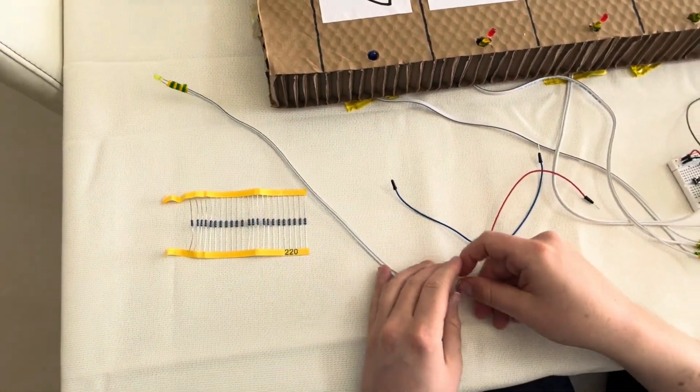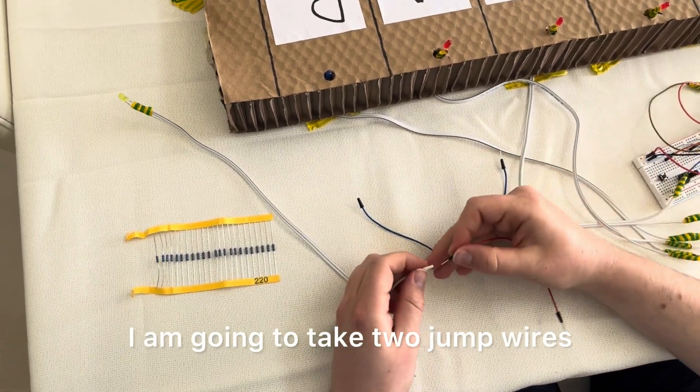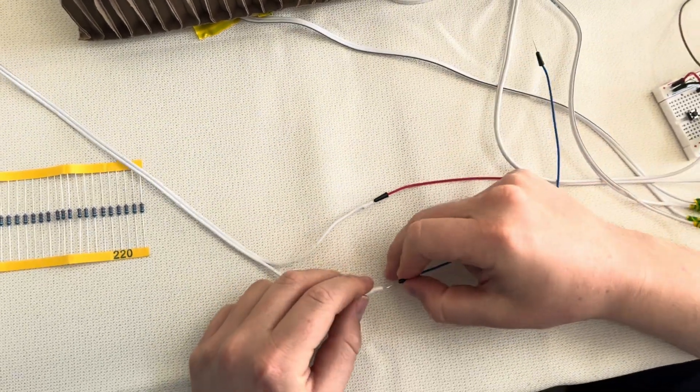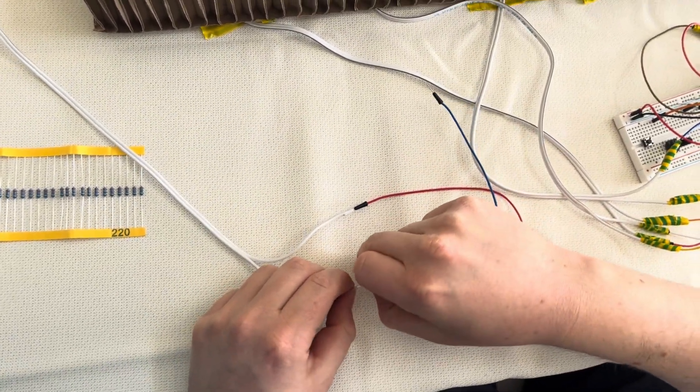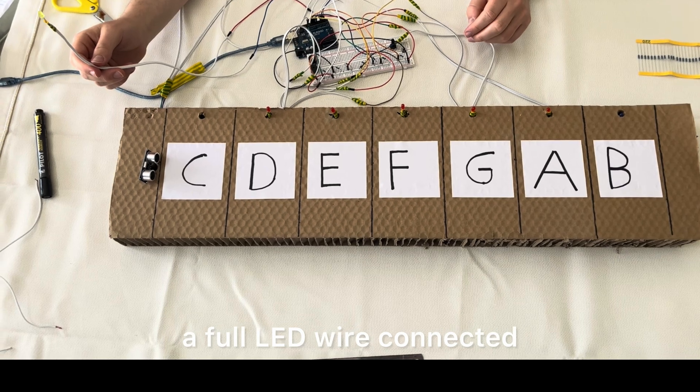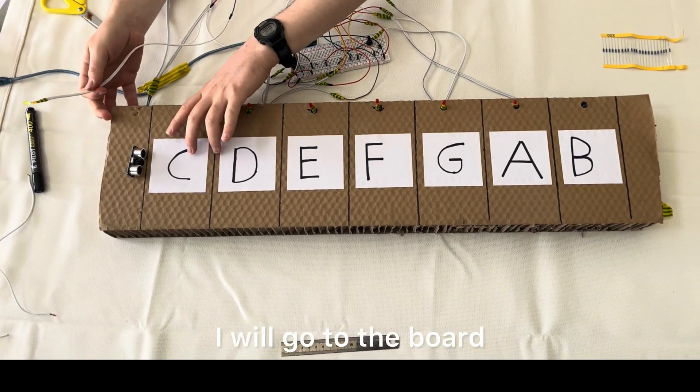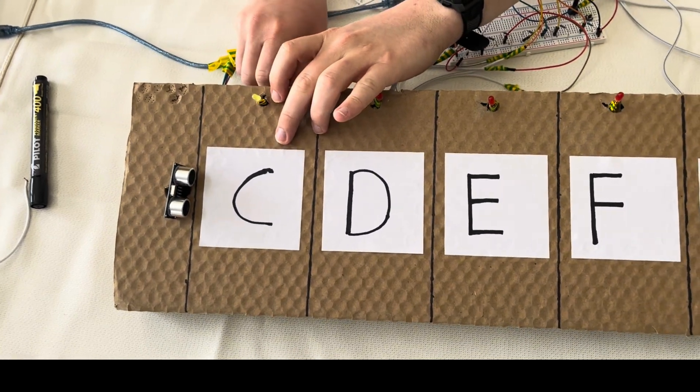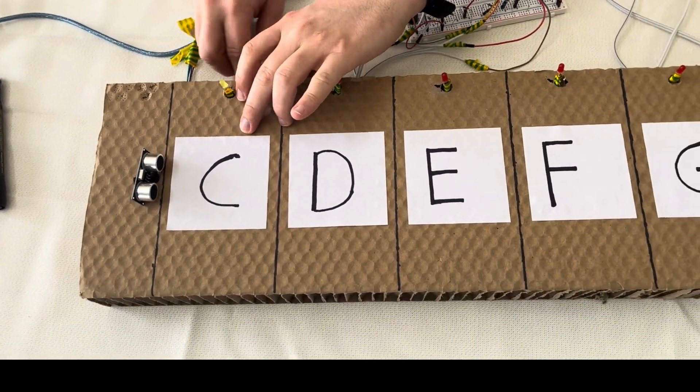Now at the other end, I am going to take two jump wires that came with the board and just push them in. And once I have a full LED wire connected, I will go to the board, funnel it in from the bottom, and this is in the hole they've made in the cardboard.